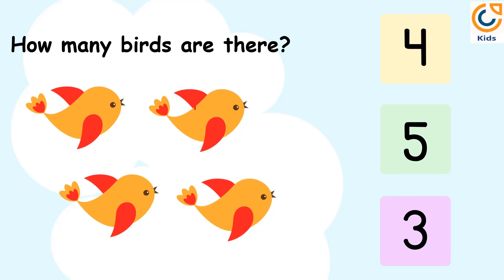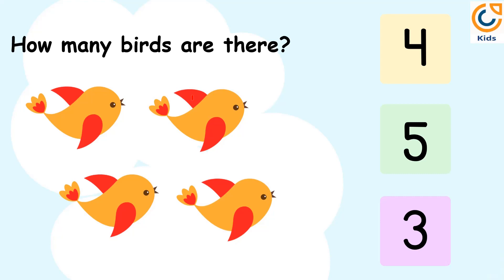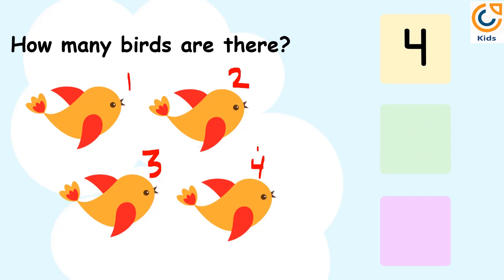How many birds are there? Let's count the number of birds. 1. 2. 3. 4. There are 4 birds. So, the answer is 4.